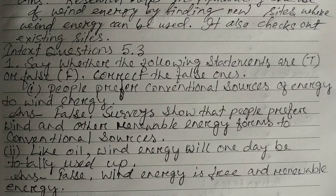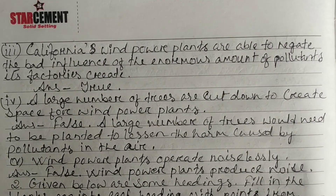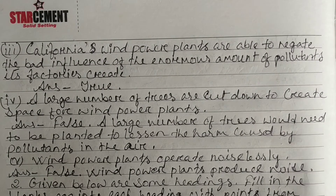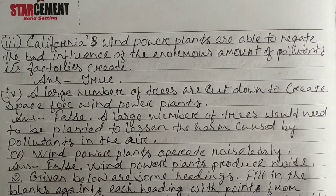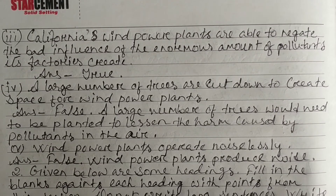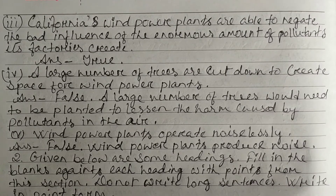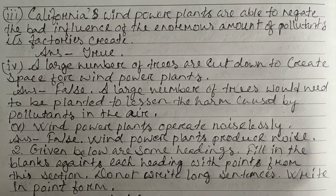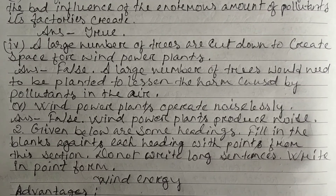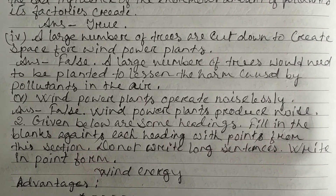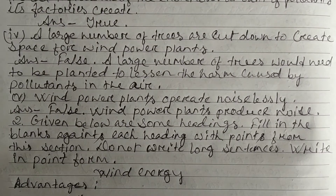Wind energy is free and renewable energy. Statement 3: California's wind power plants are able to negate the bad influence of the enormous amount of pollutants its factories create. Answer: True. Statement 4: A large number of trees are cut down to create space for wind power plants. Answer: False. A large number of trees would need to be planted to lessen the harm caused by pollutants in the air.